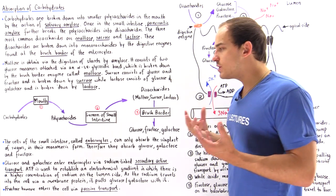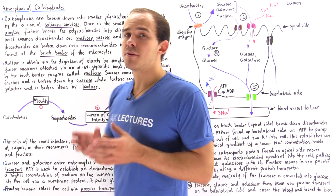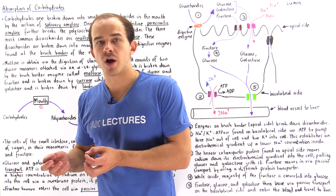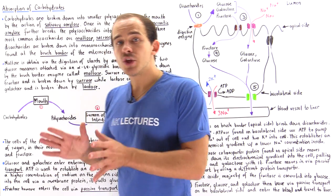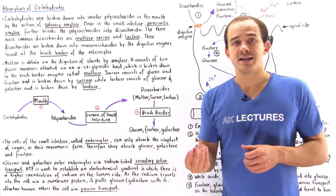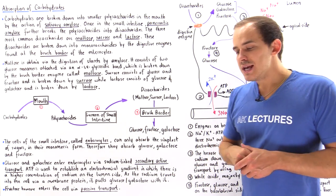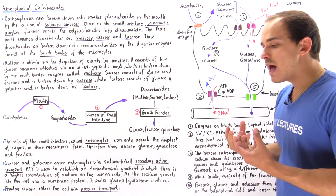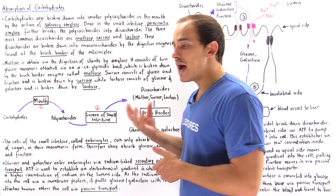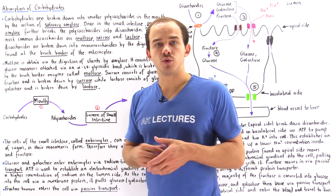Pancreatic amylase breaks down the polysaccharide into disaccharides, and those disaccharides consist of only two monomers of sugar. Now our cells cannot actually absorb disaccharides — they're simply too large.